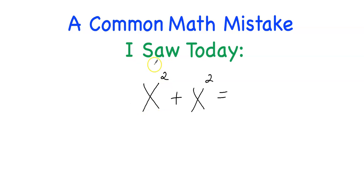Think the following: we have one X squared here plus one X squared here, and that's a total of two X squared. So this is the correct answer, two X squared.